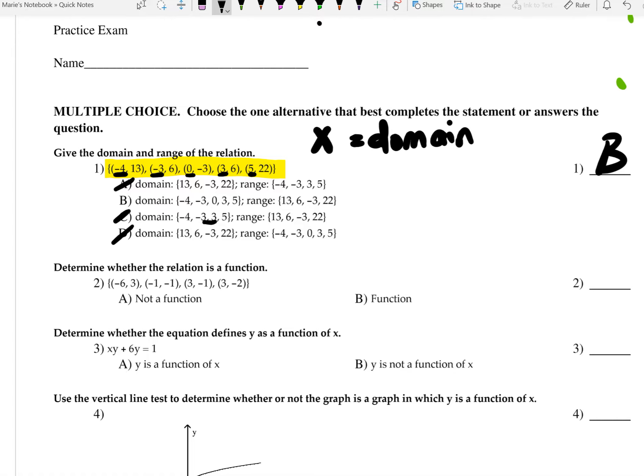For the next question, it says, determine whether the relation is a function. If you recall, it has to pass the vertical line test for it to be a function. So if I were to graph this on a coordinate plane, and I have negative 6, 3, so let's assume that's somewhere about here. I have negative 1, 1, so that's about here. I have 3, negative 1, so let's assume 3, negative 1 is somewhere about here.